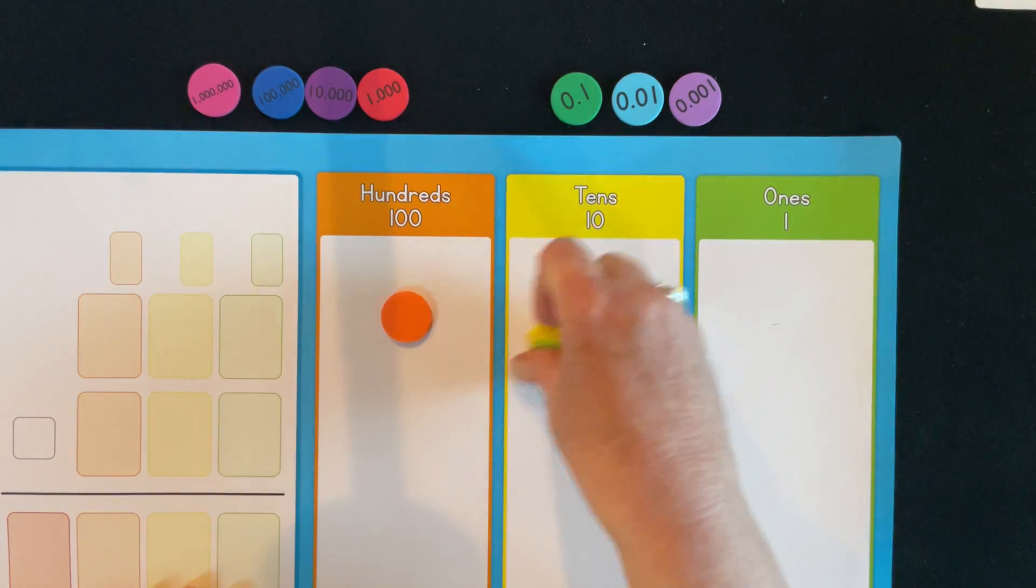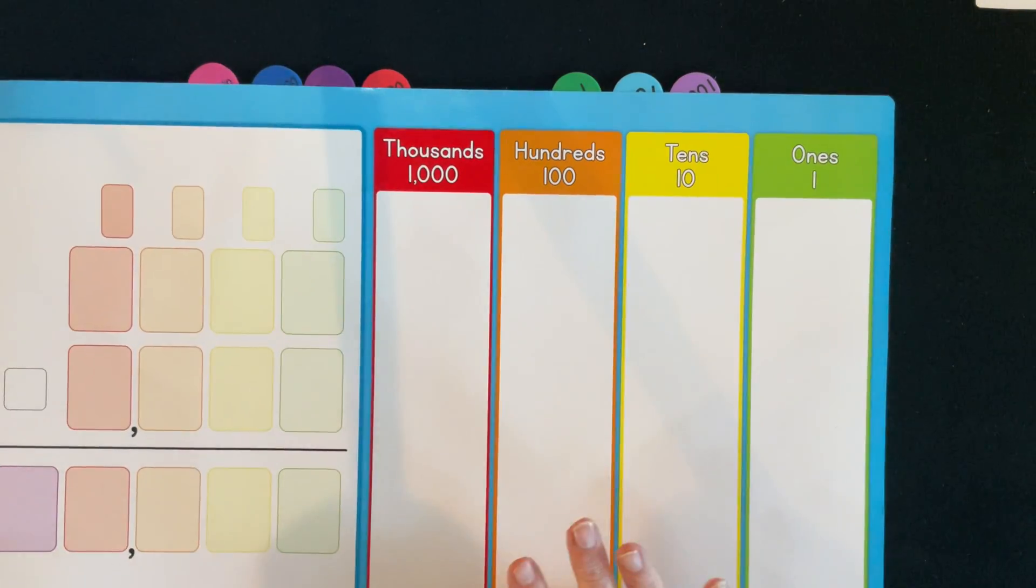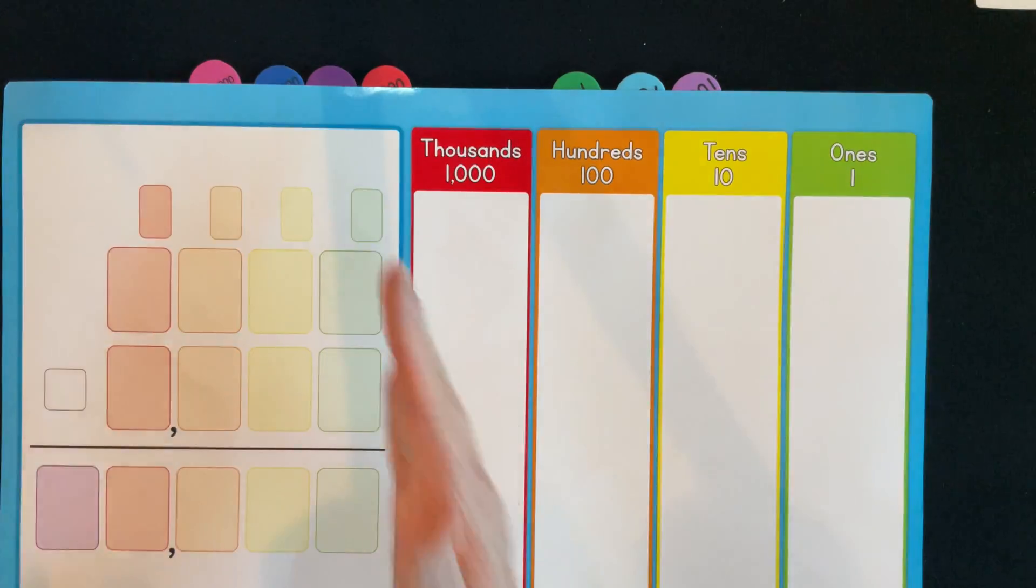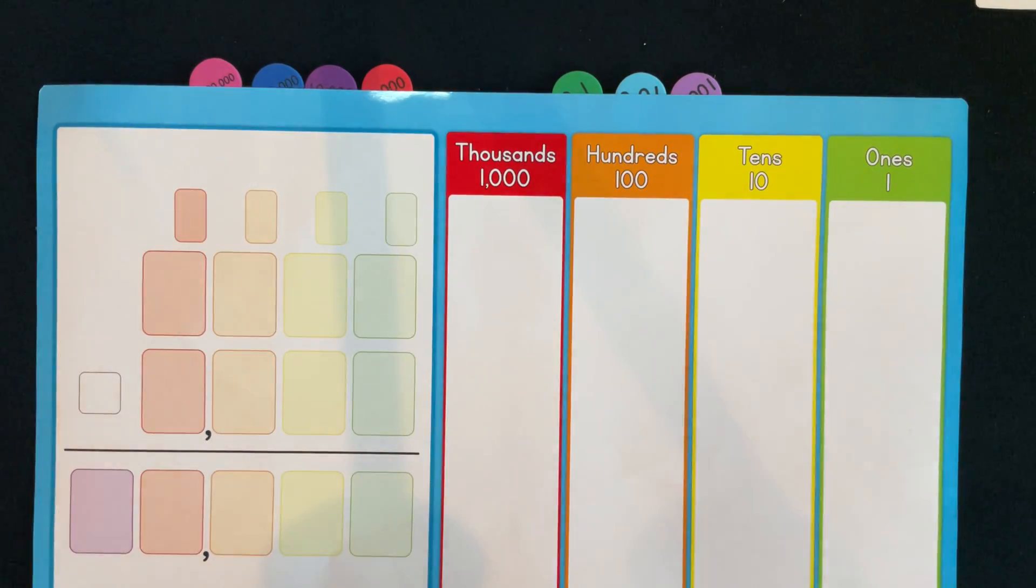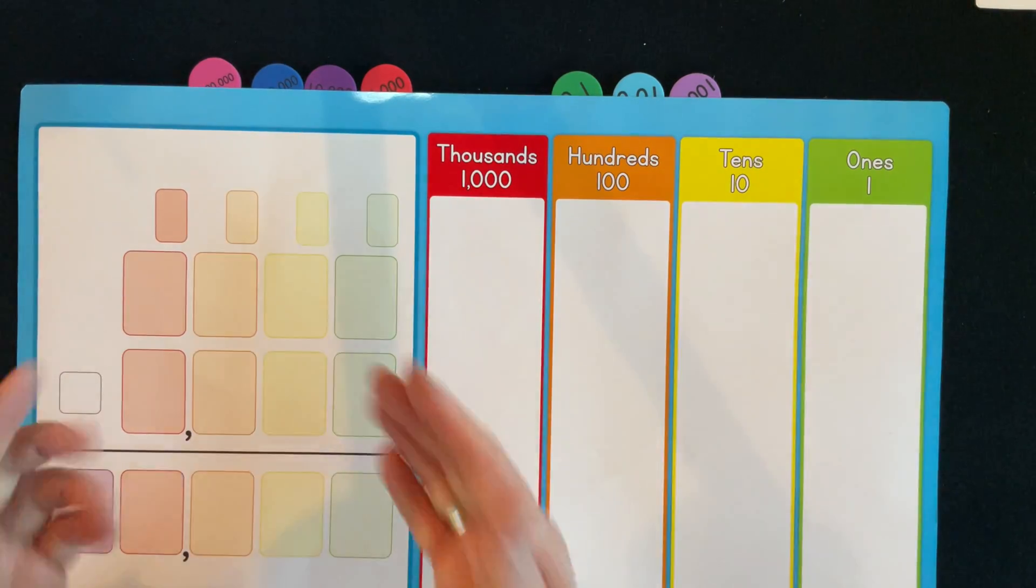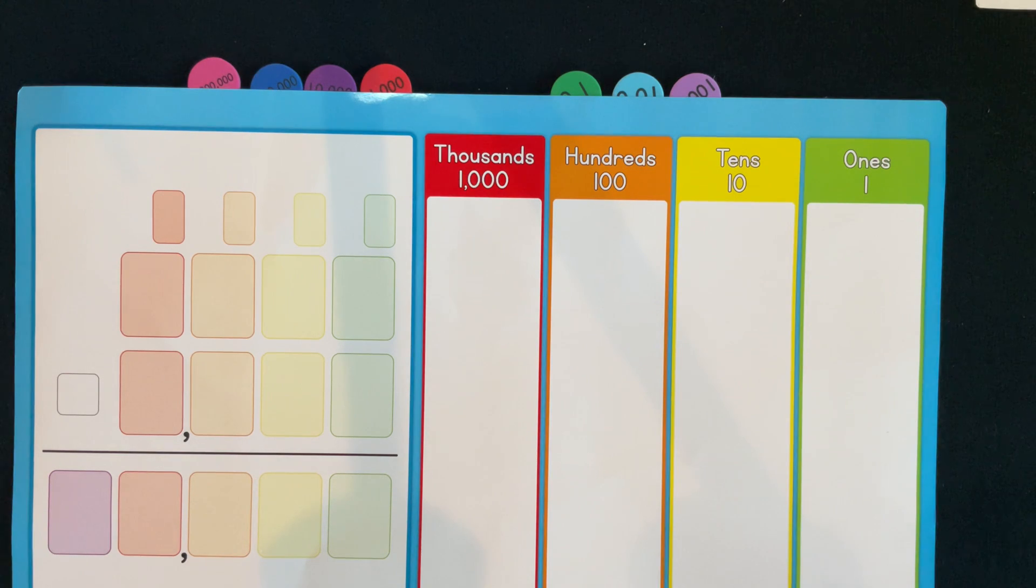This place value chart, this particular one on the back, will take you to the thousands. It also has on the left-hand side a place where you can actually have the student perhaps copy the problem by numerics, which sometimes we call the standard form or the standard algorithm.